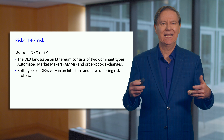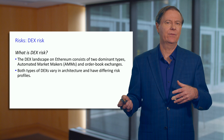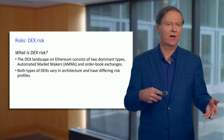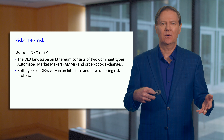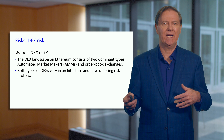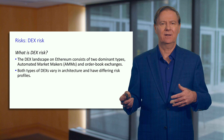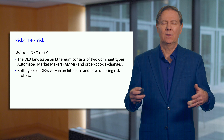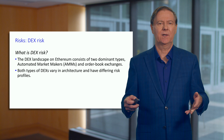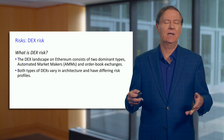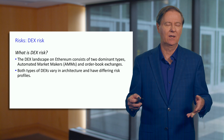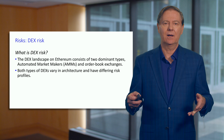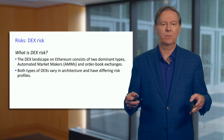We also talked about how to handle order books in an exchange — whether to have an on-chain order book or something off-chain — and the risks associated with that. We talked about an interesting potential solution of using a layer 2 to do the limit order book.